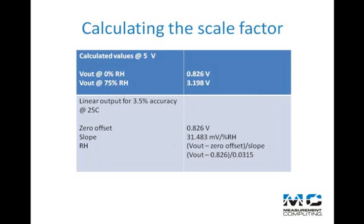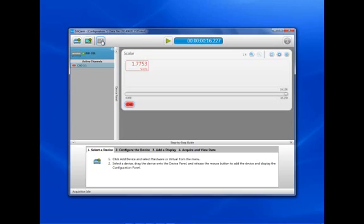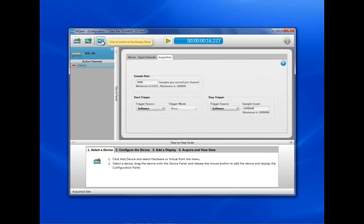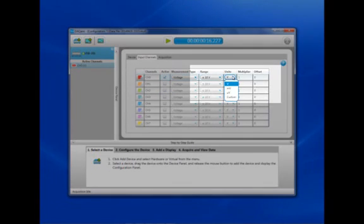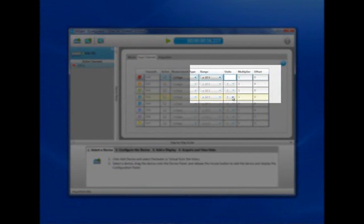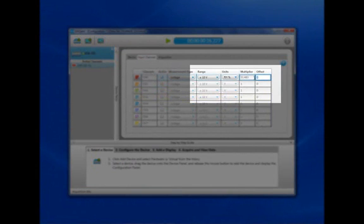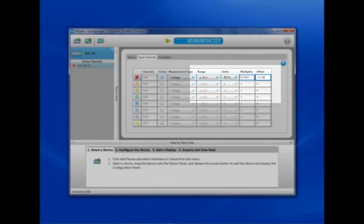Now, we just need to enter them into our formula in DAQAMI. And to do so, we need to switch to the configuration panel. After that, pull down the units menu and select custom. Type in RH percent sign for relative humidity, then add your scale factor values.